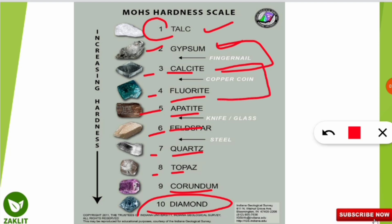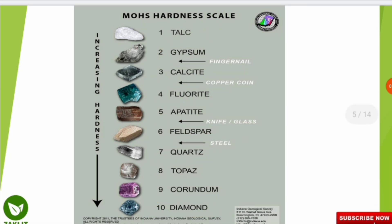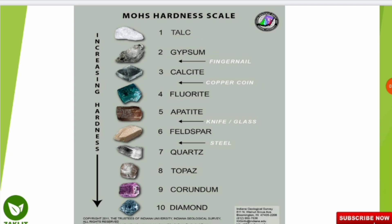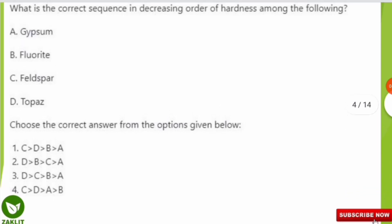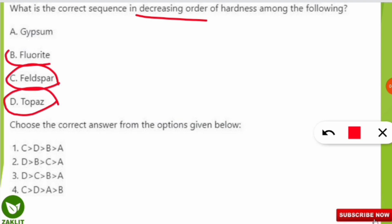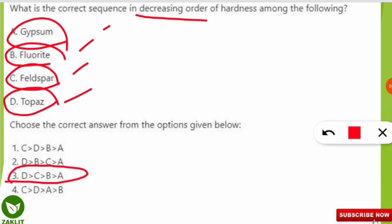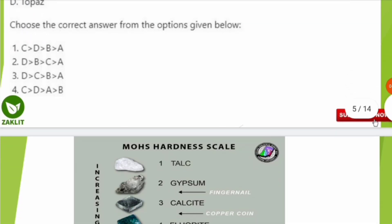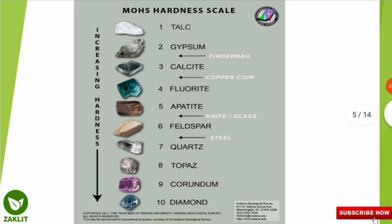Continuing the Mohs scale: a copper coin falls between 3 and 4; a knife and glass fall between apatite and feldspar; steel falls between 6 and 7. Topaz is at 8, corundum at 9, and diamond has the highest hardness at 10. For the question asking decreasing order of hardness among the four minerals: topaz is highest, followed by feldspar, fluorite, and gypsum — so the correct sequence is D, C, B, A, which is option number three.